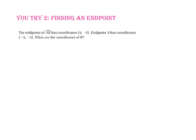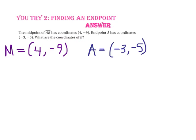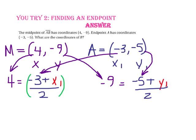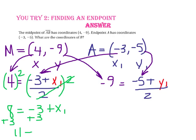Pause the video and do U-Try number 2. We know the midpoint of segment AB has coordinates (4, negative 9), and endpoint A has coordinates (negative 3, negative 5). We want to find the coordinates of point B. Let (4, negative 9) represent (x, y) and (negative 3, negative 5) represent (x₁, y₁). Multiplying both sides of the first equation by 2: 4 times 2 is 8, the 2s cancel, leaving negative 3 plus x₂. Adding 3 to both sides gives x₂ equals 11.